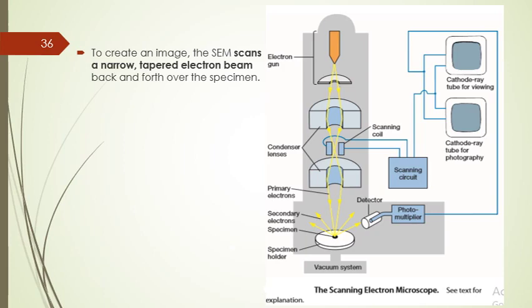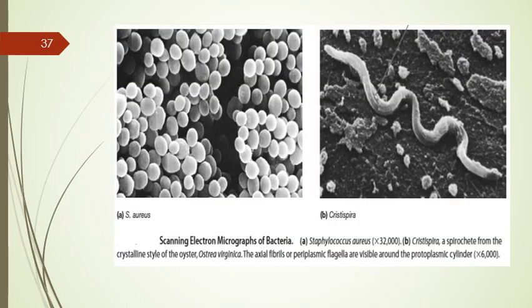The number of secondary electrons reaching the detector depends on the nature of the specimen surface. When the electron beam strikes a raised area, a large number of secondary electrons enter the detector. In contrast, fewer electrons escape from a depression in the surface, so raised areas appear lighter on the screen and depressions appear darker. Examples of SEM images include Staphylococcus and Cristispira.